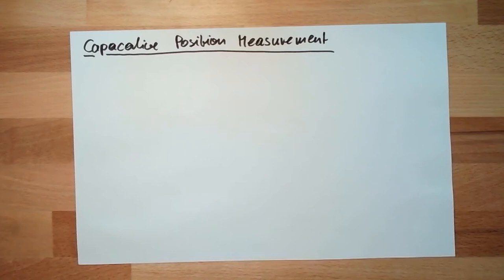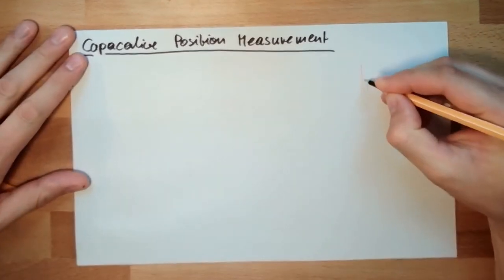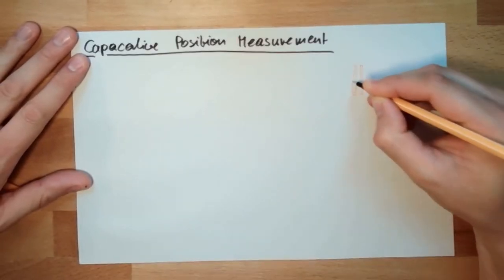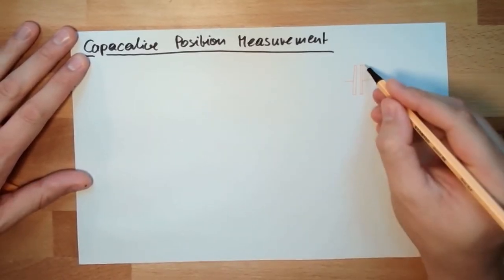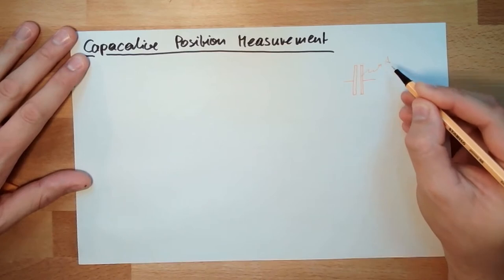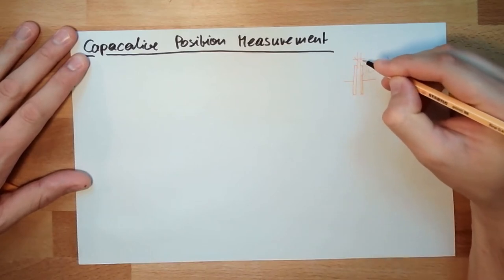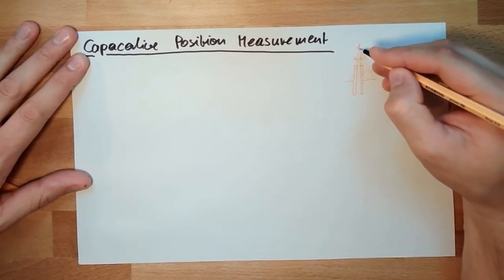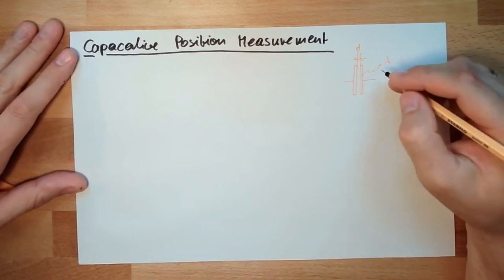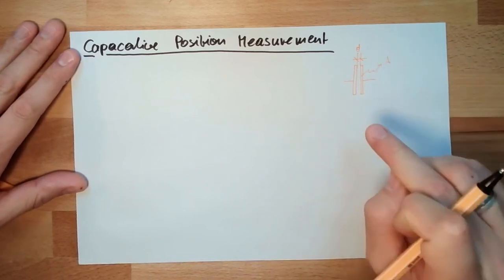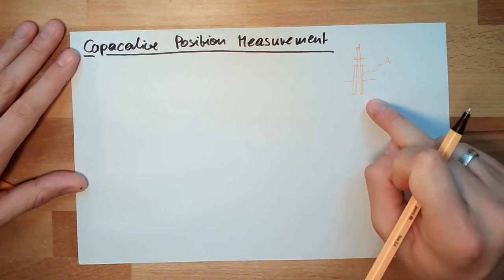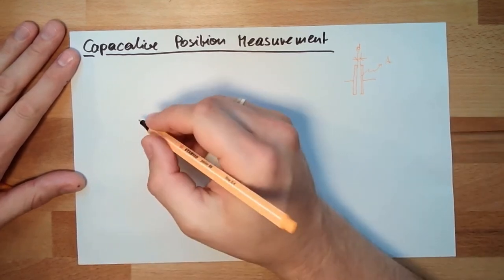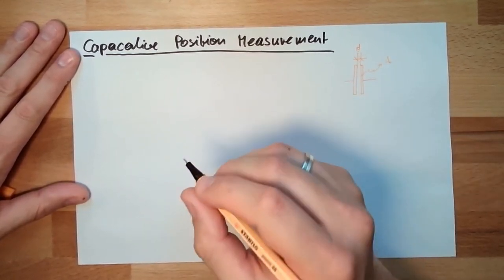If you think of a capacitor, you think of two blades — a classical capacitor with an area and a distance. The bigger the area, the more capacity. The smaller the distance, the more capacity. Those two things I can use.